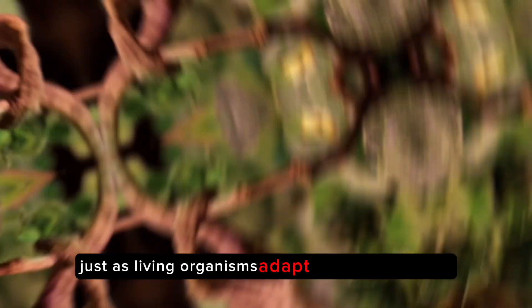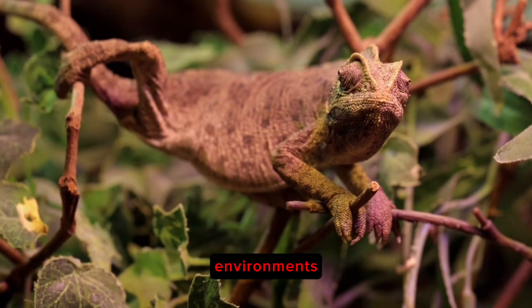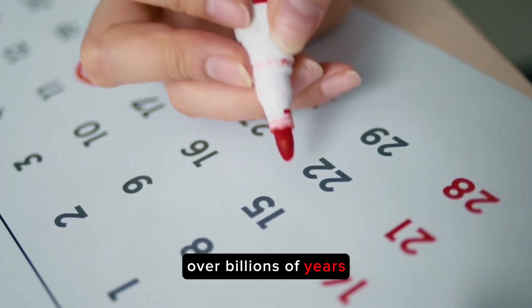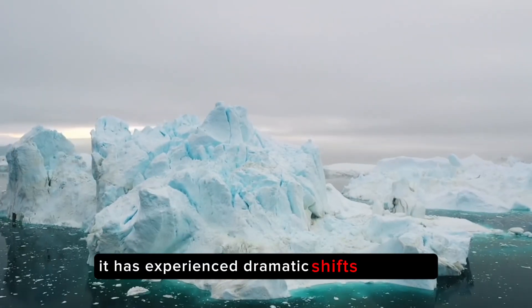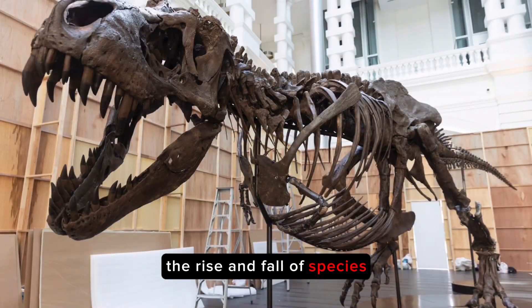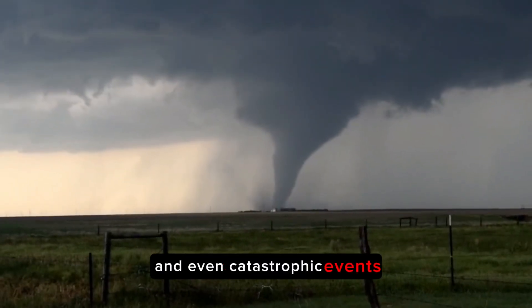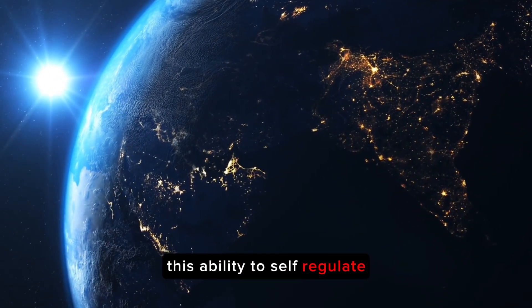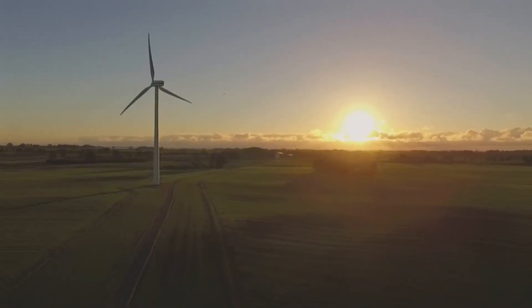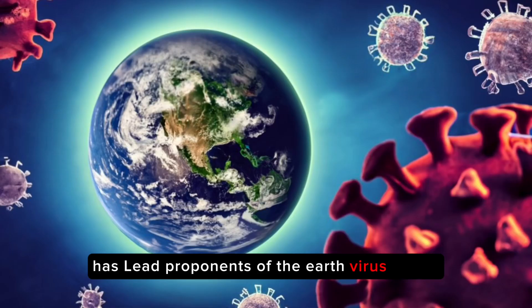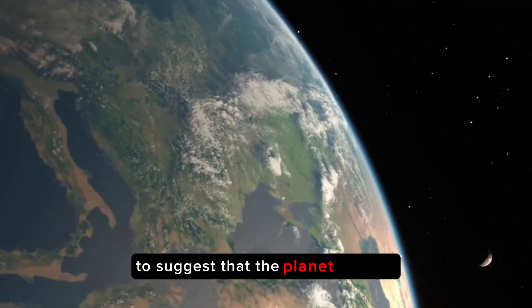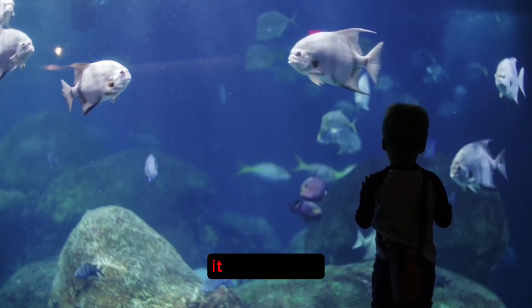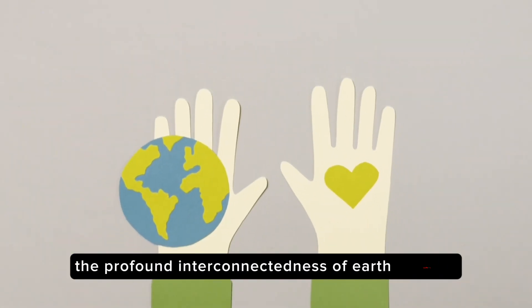Just as living organisms adapt to changes in their environment, Earth has shown remarkable resilience and adaptability over billions of years. It has experienced dramatic shifts in climate, the rise and fall of species, and even catastrophic events like asteroid impacts, yet it endures. This ability to self-regulate and maintain a stable environment has led proponents of the Earth virus theory to suggest that the planet exhibits characteristics of life.